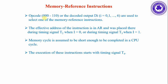The opcode decoding signals d0 to d6 are used to select the memory reference instructions. The effective address of the instruction is in the address register and was placed there during timing signal T2 in the case of direct address (I=0), or during timing signal T3 in the case of indirect address. The memory cycle is assumed to be short enough to be completed in a CPU cycle. Execution of these instructions starts at timing signal T4.